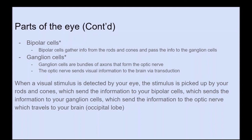Bipolar cells gather information from the rods and cones and pass it to the ganglion cells. The ganglion cells are bundles of axons that form the optic nerve, which sends visual information to the brain via transduction. So when a visual stimulus is detected, it is picked up by rods and cones, sent to bipolar cells, then ganglion cells, then the optic nerve, which travels to the brain through the occipital lobe — but first visiting the thalamus, which routes information to the correct brain regions. All of this happens in milliseconds.